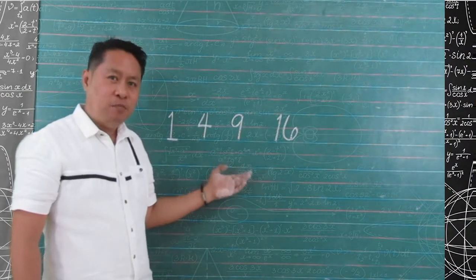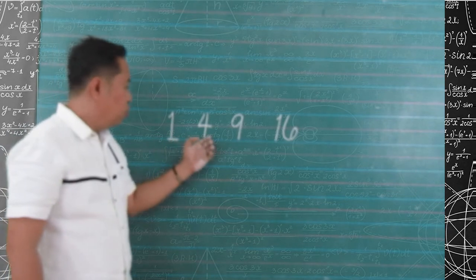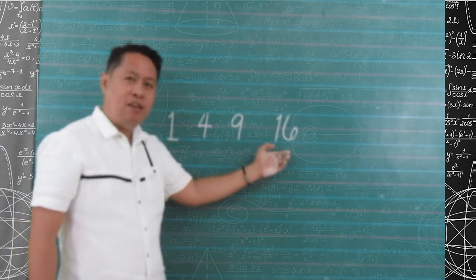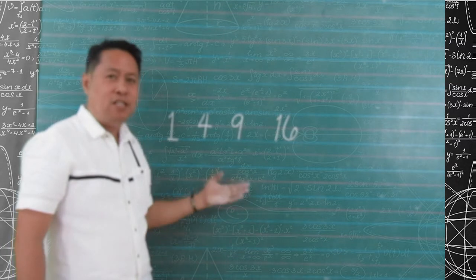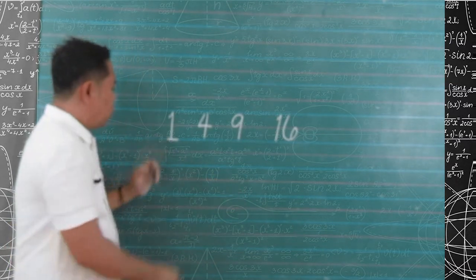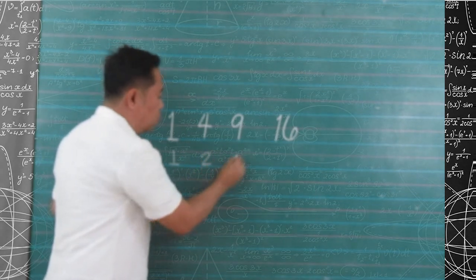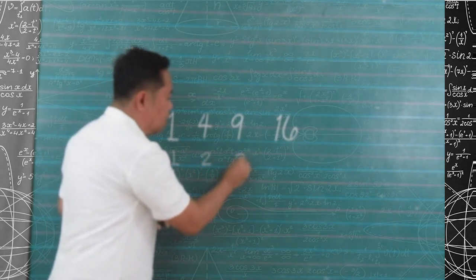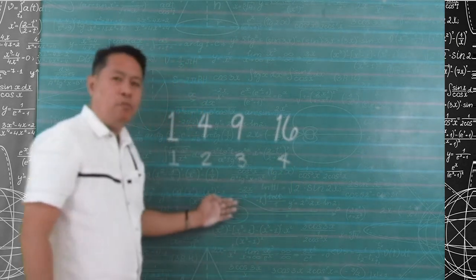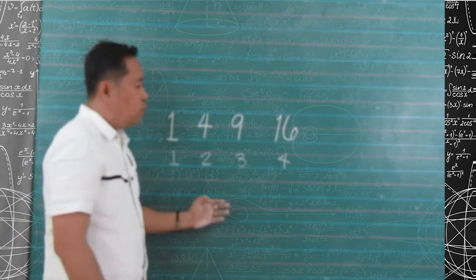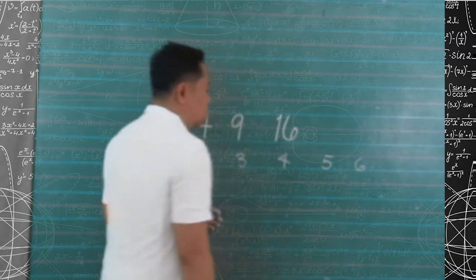Now, let's begin with these numbers: 1, 4, 9, 16. What do you think the pattern is used in this sequence? Let us name 1 as the first term, 4 as the second term, 9 as the third term, and 16 as the fourth term. We need to find the 5th and 6th terms.